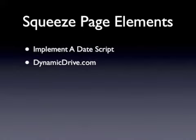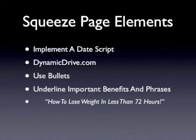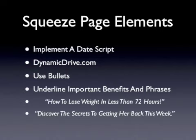Using bullets to emphasize key features and benefits is a common method of drafting an effective and compelling Squeeze Page, and it helps break down the information into small bits that are easier for the reader to digest. Consider using them when designing your landing page. You should also consider underlining important benefits in action phrases such as 'How to lose weight in less than 72 hours' or 'Discover the secrets to getting her back this week.' Your site must provide crisp content — written in a way that draws attention with magnetic headlines, bulleted points, etc. On top of everything else, it should endorse your own image.